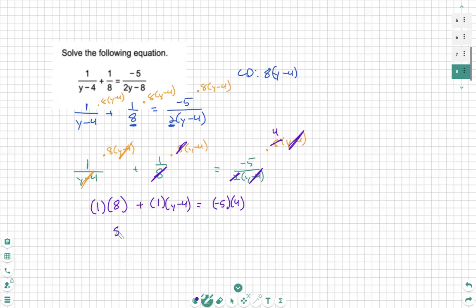Now all we're going to do is clean up. 8 times 1 is 8. Distribute your 1, which is easy, just becomes y minus 4. And then negative 5 times 4 is negative 20. Then we're going to combine like terms. 8 plus y minus 4 equals negative 20. Y plus 4 equals negative 20. Y equals negative 24.